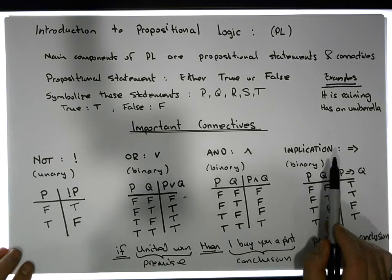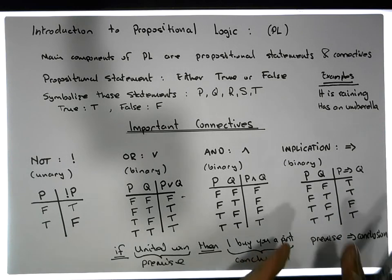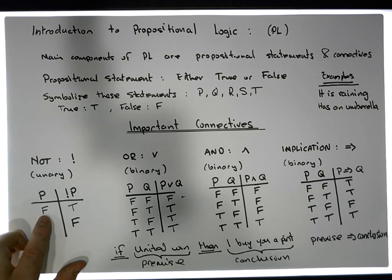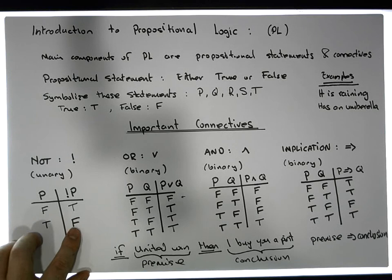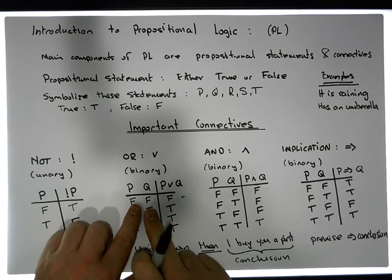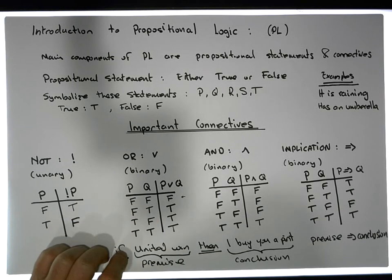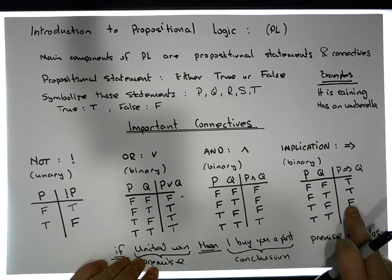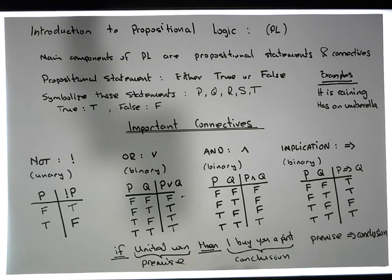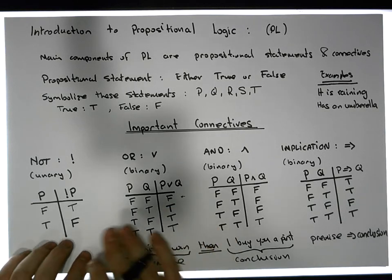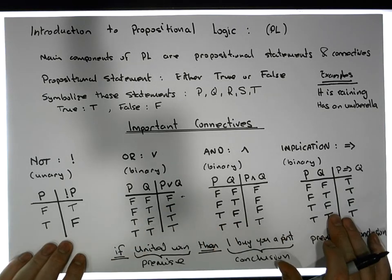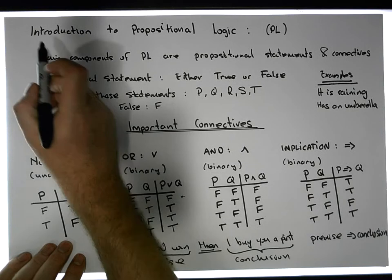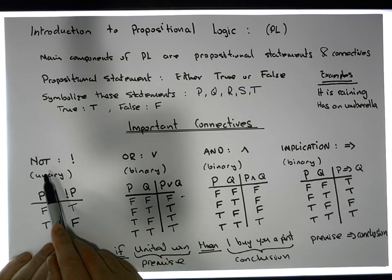The implication is a little tricky to grasp, but here's a way to understand the four operators together. NOT is straightforward — you just flip the current state: false goes to true, true goes to false. OR is only ever false when both inputs are simultaneously false. AND is only ever true when both inputs are simultaneously true. And an implication is only ever false when the premise is true and the conclusion is false.